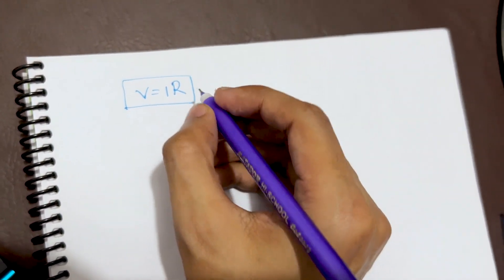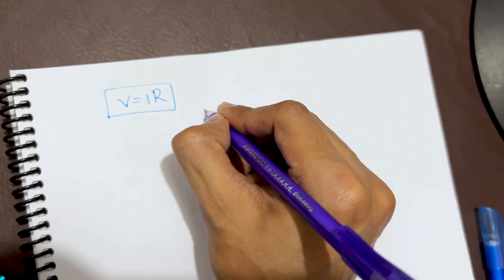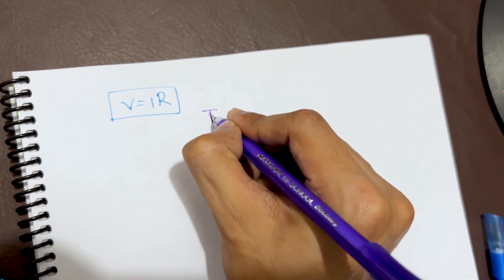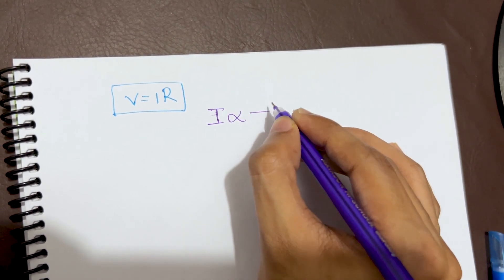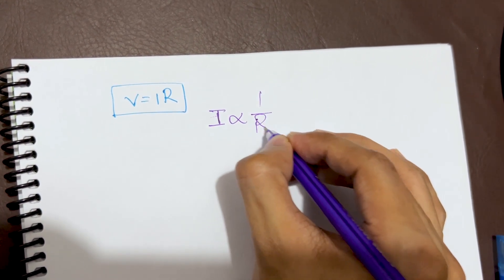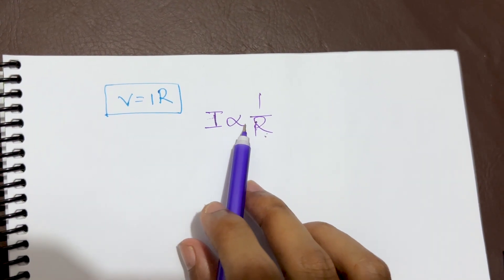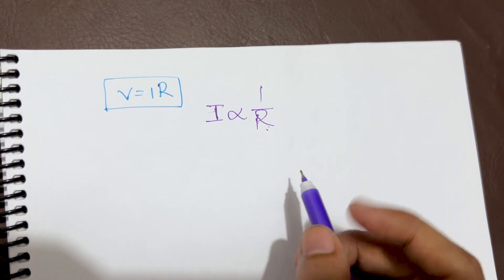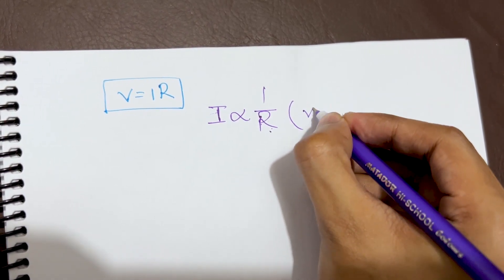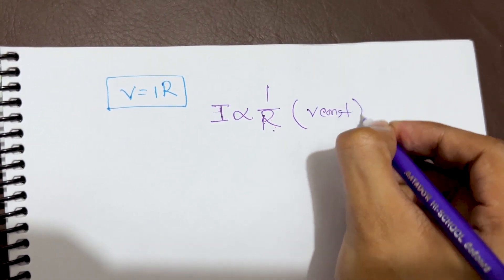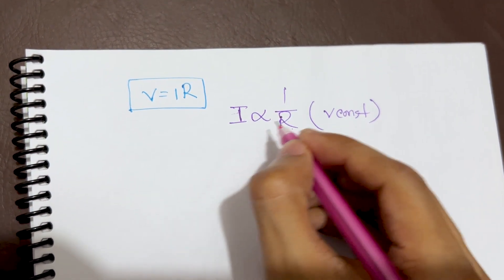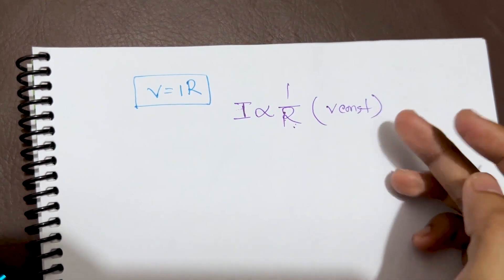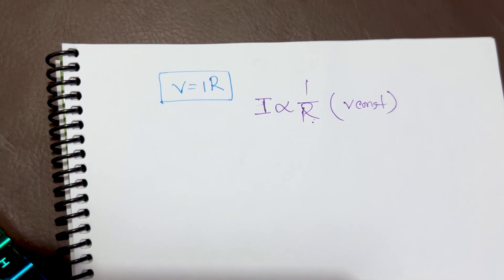Now I want to prove the second part of the law: current I is inversely related to resistance R. This means I is proportional to one over R, and we must keep V constant to prove this. So the voltage is in an inverse relation to R, and to demonstrate this we'll draw a new circuit.